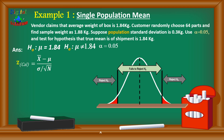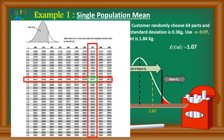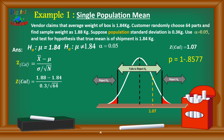We'll use the z-formula: z = (x-bar minus mu) divided by (sigma divided by the square root of n). Putting in all the values, we get z-calculated as 1.07. Going to the z-table, we find 1.07 by looking at row 1.0 and column 0.07, which gives us 0.8577. This entry in the table represents the standard normal curve area to the left of the z-value.